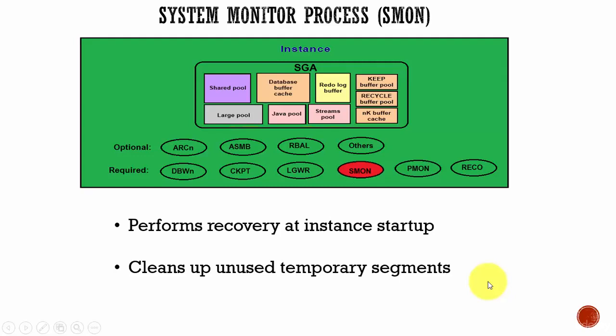In this session, let's learn about the system monitor process. The system monitor process is used to perform recovery at instance startup if necessary. If any of the terminated transactions were skipped during instance recovery because of file read or offline errors, the system monitor process can recover them when the tablespace or file is brought back online.